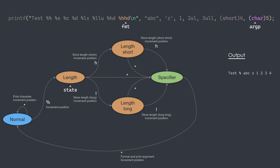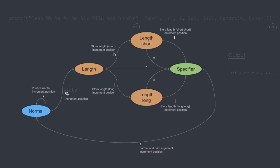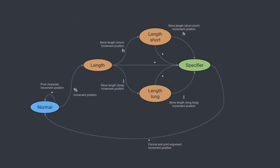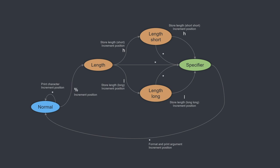I hope this explanation made things clear about how I made the implementation. In retrospect, I think the state machine could be improved a bit by eliminating the specifier state and having all the transitions go straight to normal and process the argument during the transition. This way, all the transitions would consume characters, so the implementation could have been a bit cleaner.